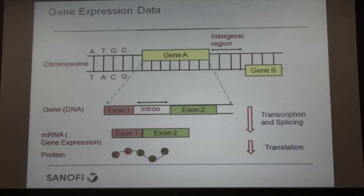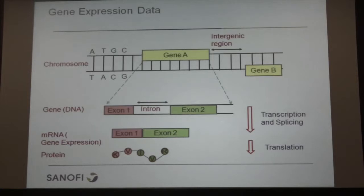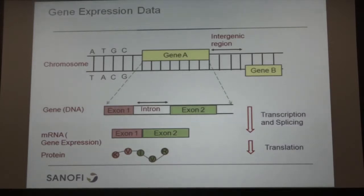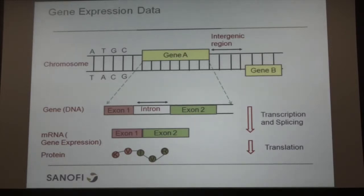A quick introduction on what gene expression data is. All the biological information is coded in the chromosome — the DNA. DNA is transcribed to what's called messenger RNA. The expression of mRNA is the gene expression biomarker we are going to work on today. The next step is that information from gene expression is translated to protein, which is the basic functional unit keeping every animal and human body working.